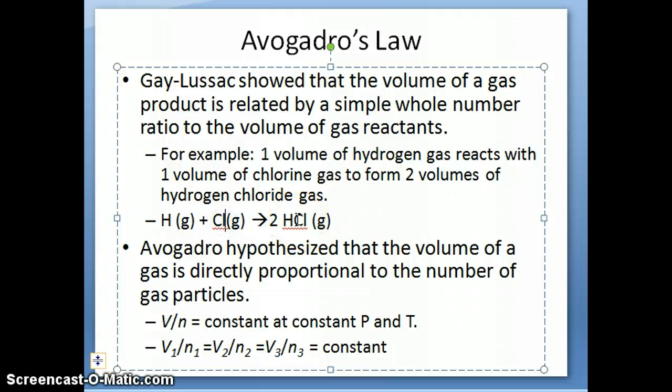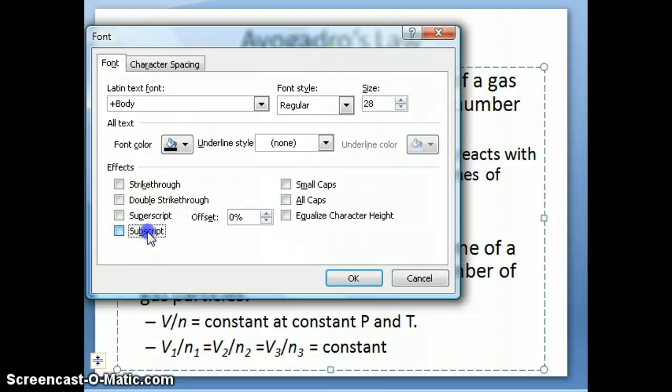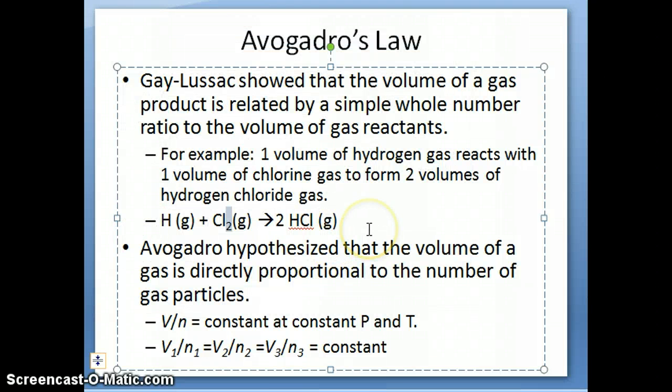Then the only thing that makes sense is to assume that these are diatomic gases, which people didn't know existed at the time. So I'm going to just put this as a subscript here. So then as a result of this idea by Avogadro, people realized that these diatomic species existed, and that's how we first figured out the formulas for compounds, and these all came about from study of gases.